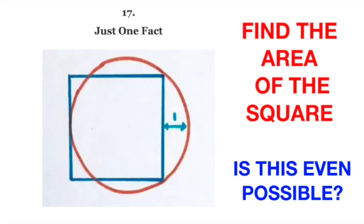Today, let's take a look at this seemingly impossible geometry question. Given just only one length measure of unit 1, how are we supposed to figure out the area of a square?